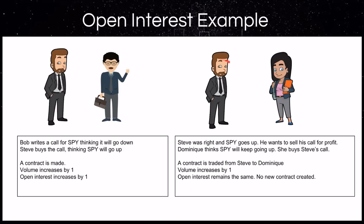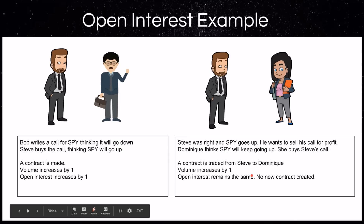Now Steve was right — SPY went up, he made money and wants to lock in his profit by selling his call. Dominique thinks SPY is going to keep going up, so she buys that call from Steve. It's the same contract that was created between Bob and Steve — it's just changing hands, there's no new contract. A contract is traded but not created. The volume increases by one for that trade, but the open interest remains the same because no new contract was created.